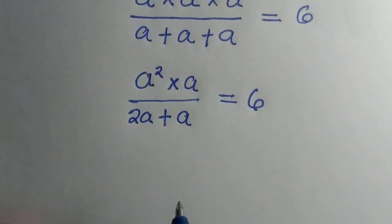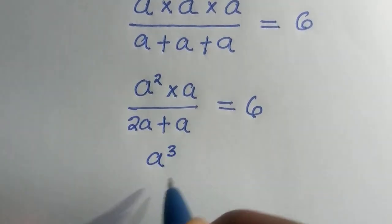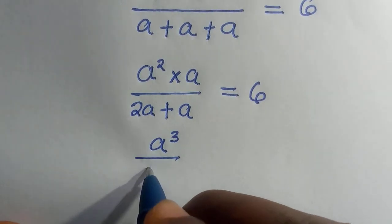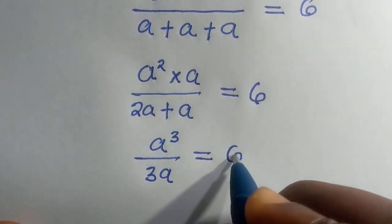Next, when we multiply a squared by a, we have it as a raised to the power of 3, divided by 2a plus a is given as 3a equals 6.